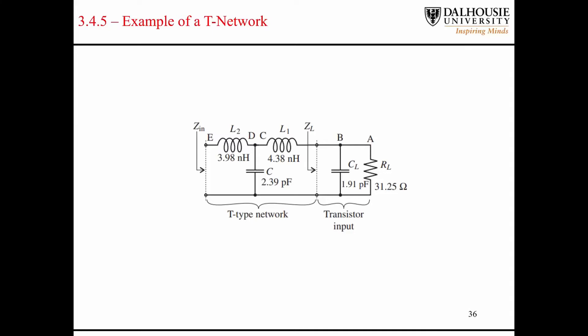Example 3.4.5 of the book shows a situation where we have the input of a transistor modeled as parallel resistor and capacitors. The intent is to design a T network such that the impedance of this load gets transformed to 50 ohms at point E here.